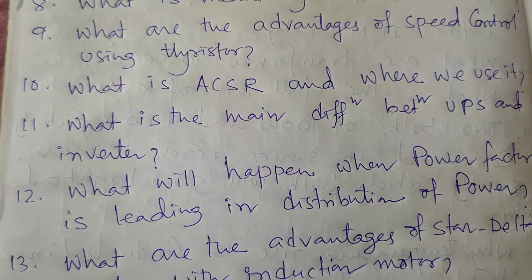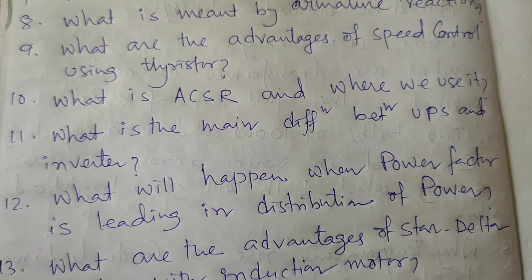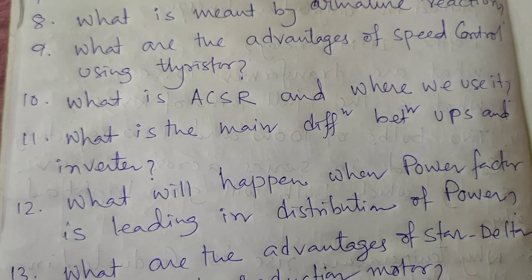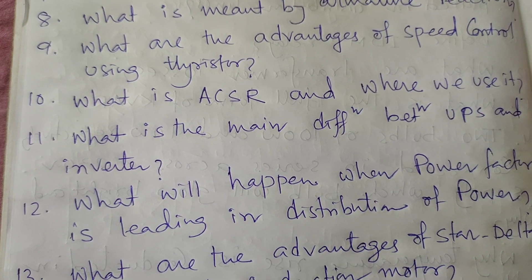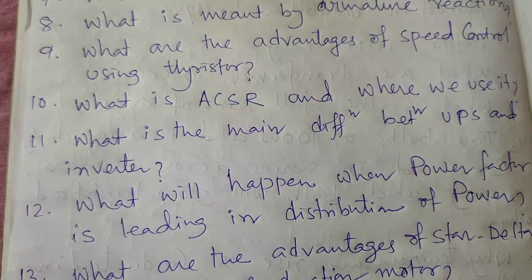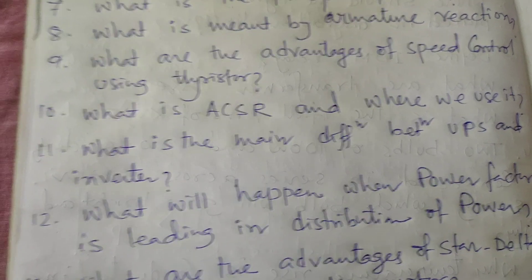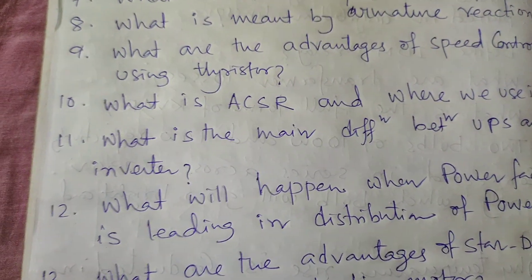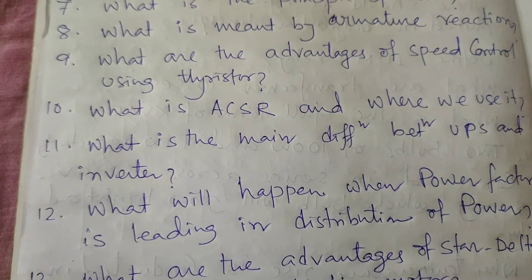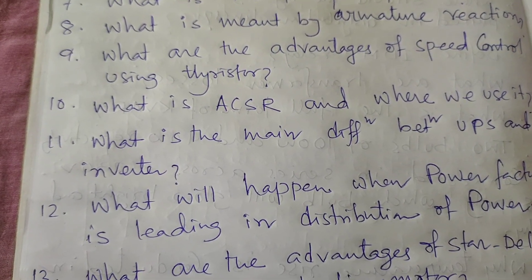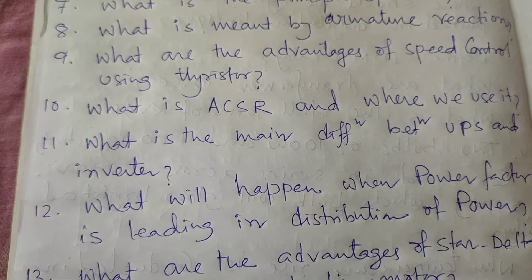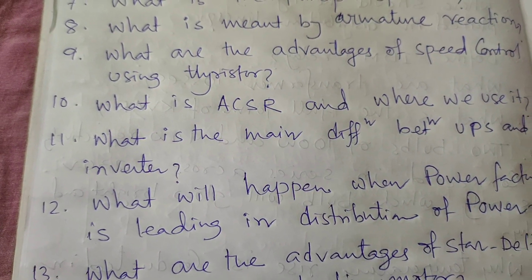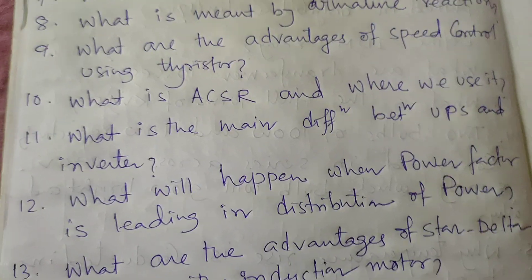Next question: What will happen when the power factor is leading in distribution of power? If there is high power factor, that is if power factor is close to one, losses in form of heat will be reduced. Second, cable becomes less bulky and easy to carry and cheaper. It also reduces overheating of transformers.